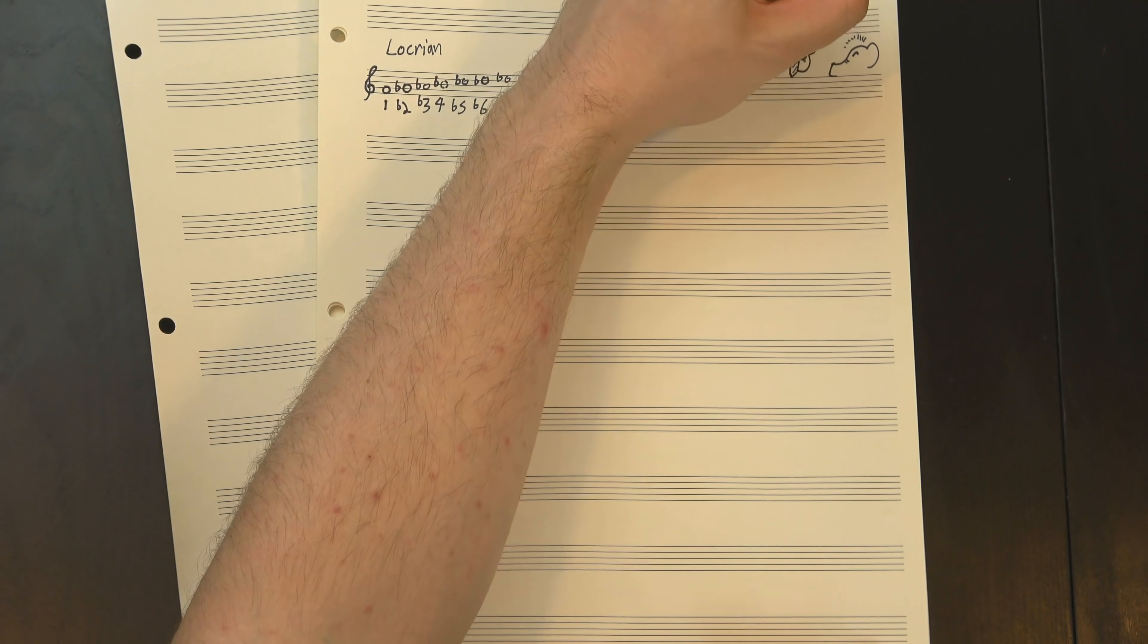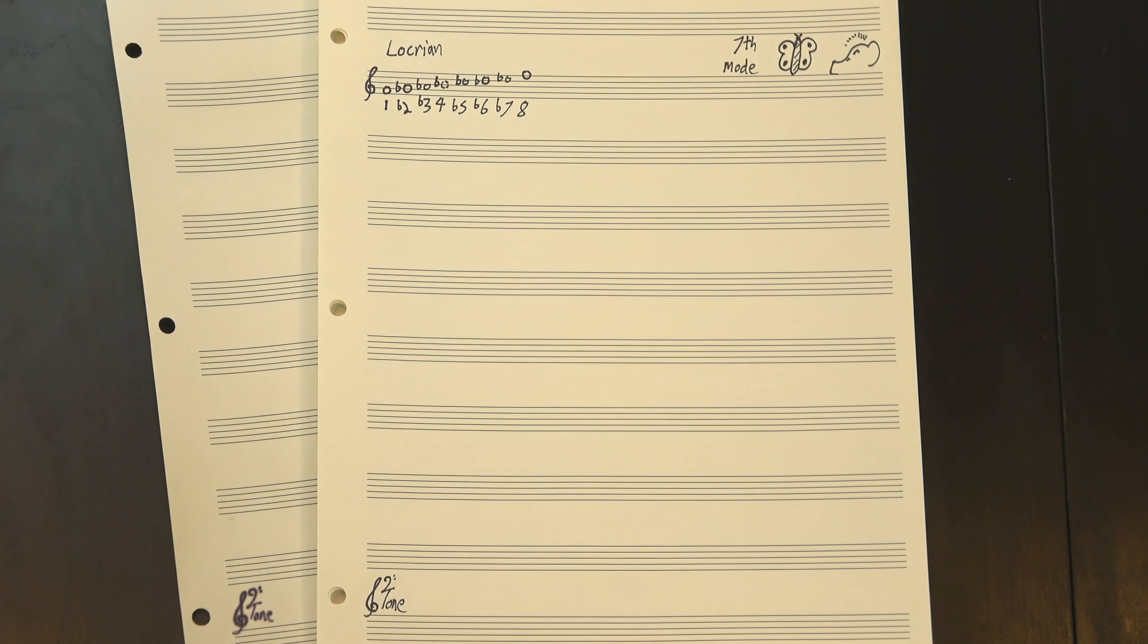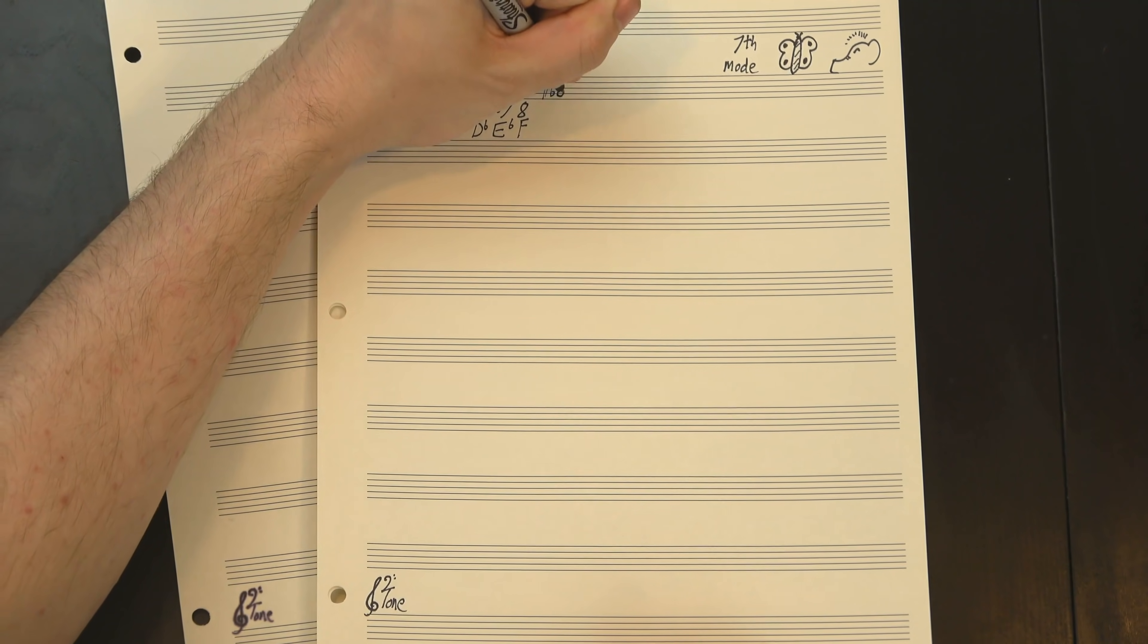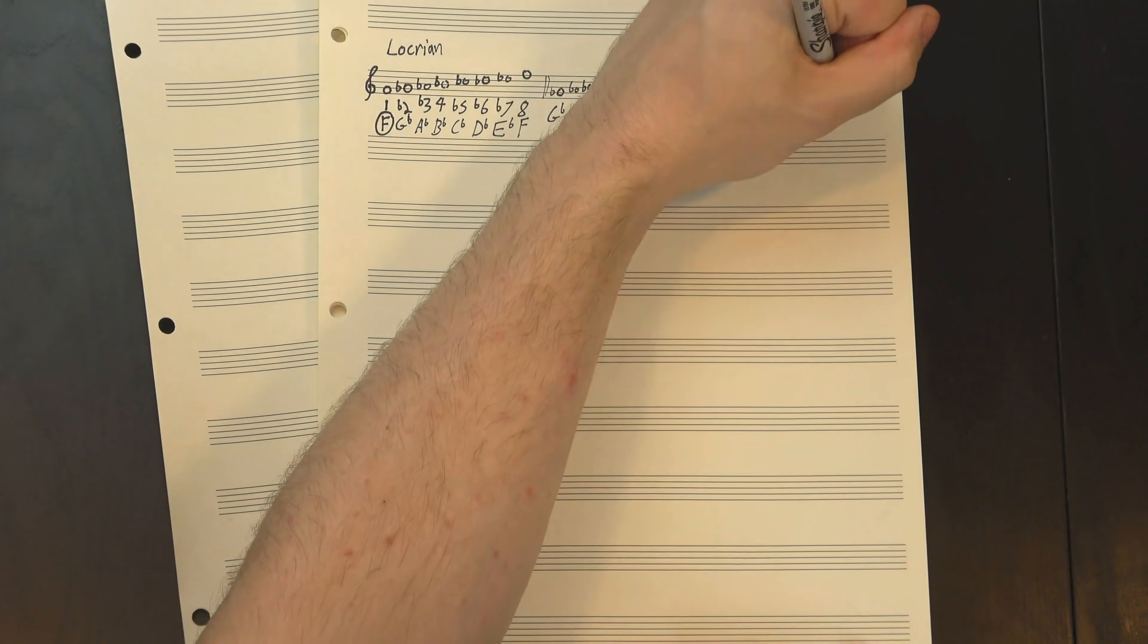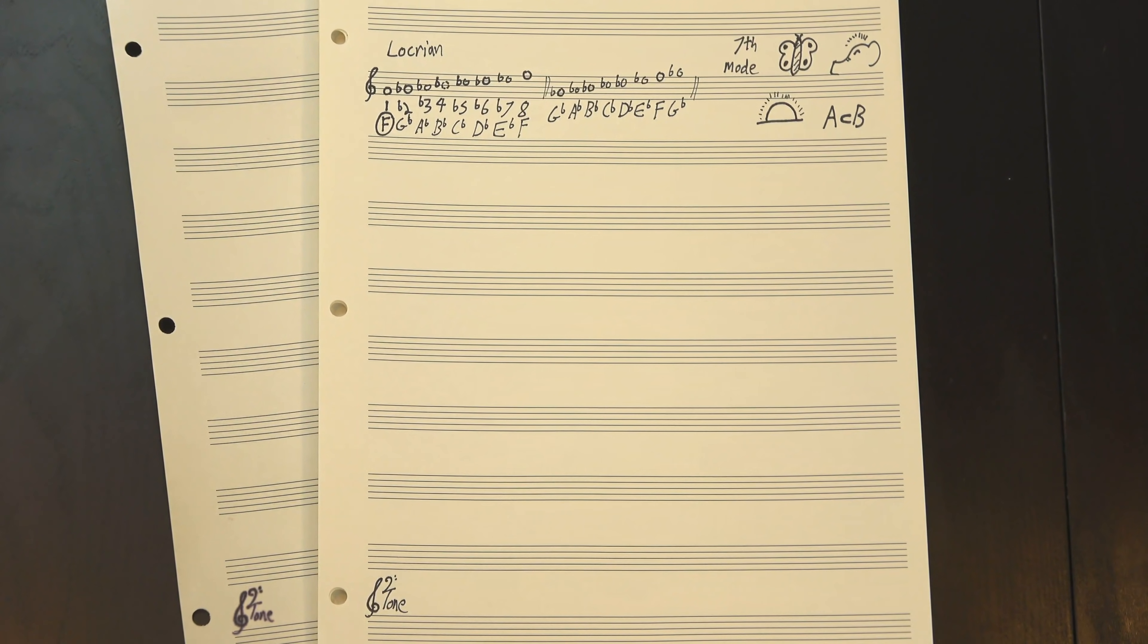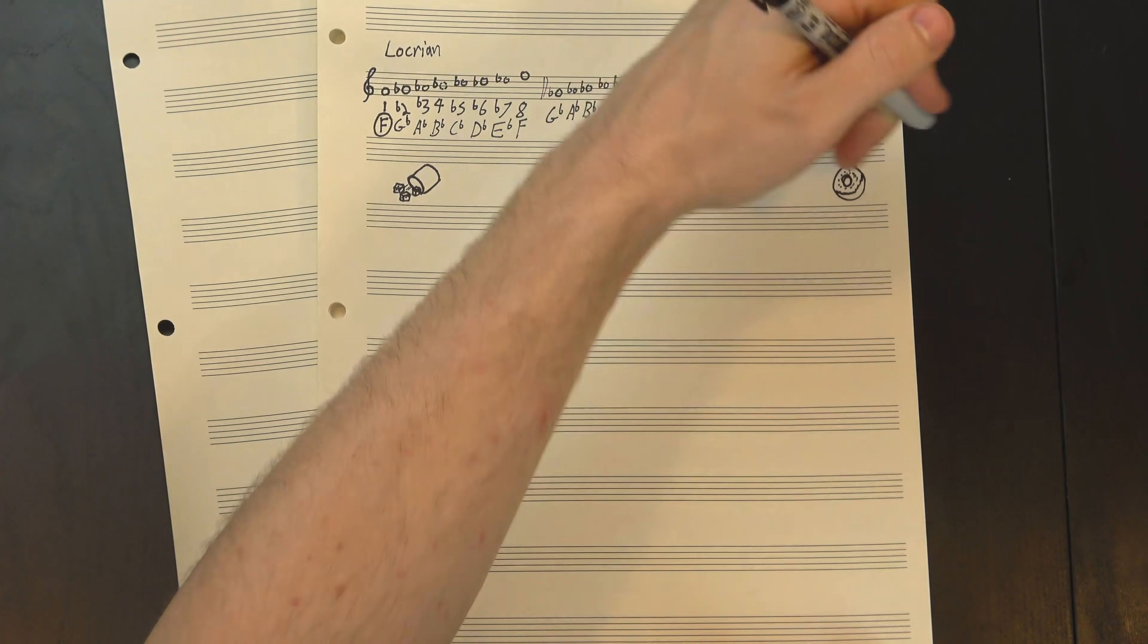And here's the thing, locrian is a mode of major. Specifically, it's the seventh mode, so F locrian is all the same notes as G-flat major, but played with F as the root. So anti-major is a subset of locrian, and locrian is a mode of major, which means that effectively anti-major is major, just jumbled around and with a hole poked in the middle.